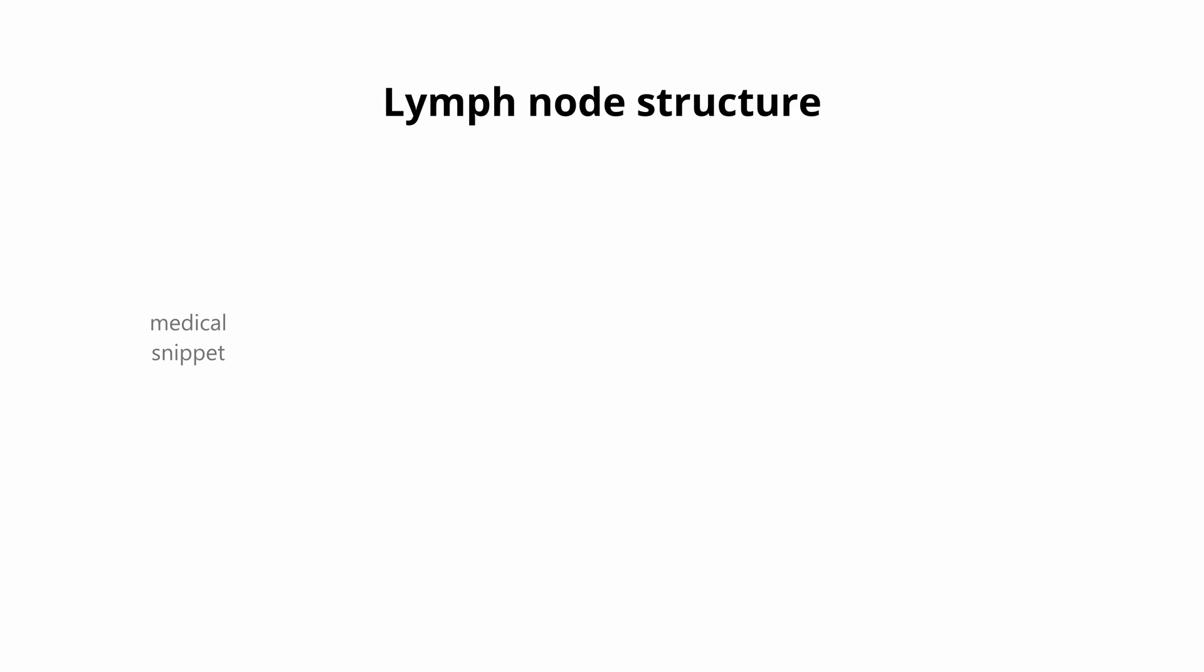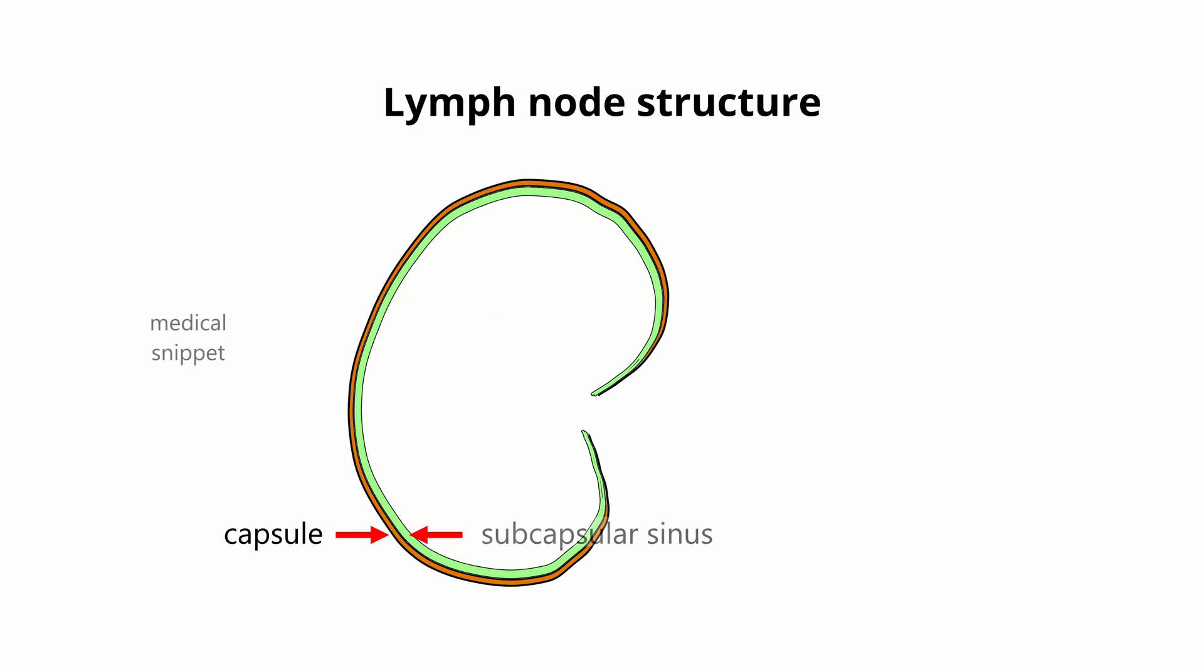Let's discuss the lymph node structure. It consists of capsule, subcapsular sinus, outer cortex, and inner medulla. The capsule of lymph node is dense connective tissue stroma and collagenous fiber. The capsule extends into the center of the lymph node in the form of trabeculae. Beneath the capsule is the subcapsular sinus.